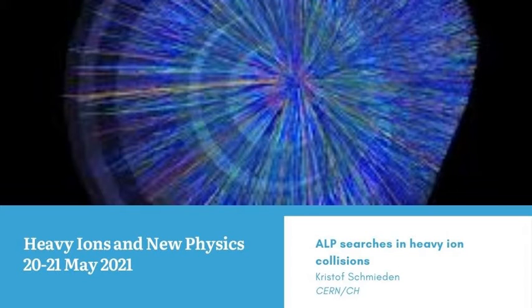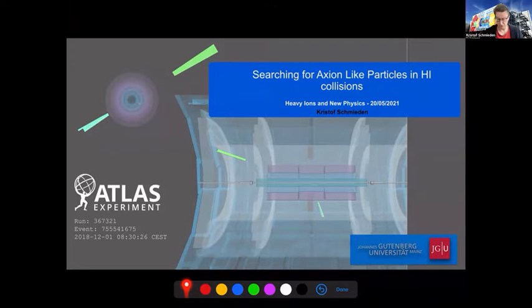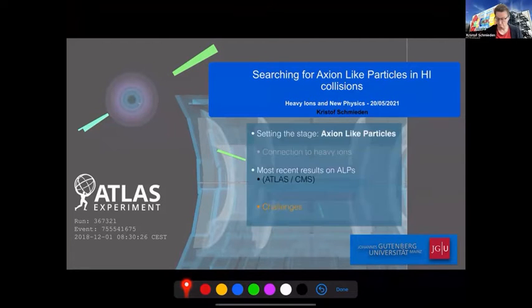I'd like to hear about this. Thanks a lot for the opportunity to talk here about searches for axion-like particles, in particular in heavy ion collisions. The talk will have three parts. First, setting the stage about axion-like particles and the connection with heavy ions. Then I will show the most recent results on ALP searches for ATLAS and CMS. There's a dedicated talk on LHCB results for that. And then I will outline the challenges that these measurements present.